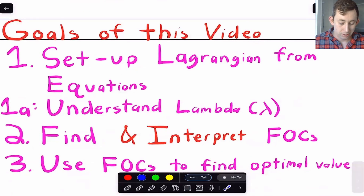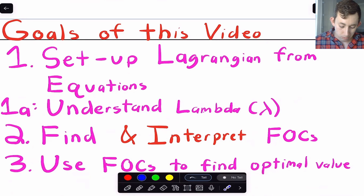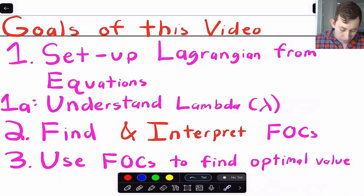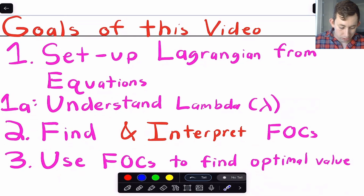What I want you to get out of this video: I want you to be able to set up a Lagrangian when you're given a set of equations, understand what we're trying to do with the Lagrangian in general, understand lambda (the Lagrange multiplier), be able to find and interpret the first order conditions, and use those first order conditions to find the optimal value for your choice variable as well as your objective function. Timestamps are below if you'd like to jump around.